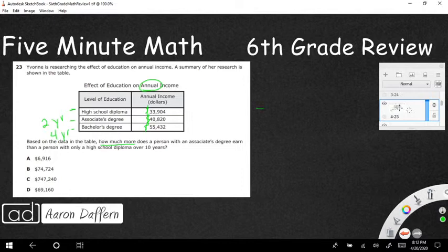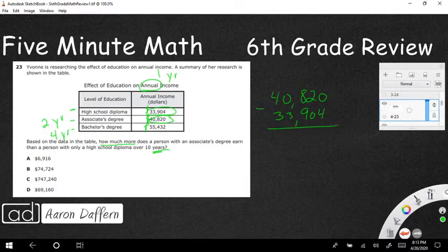How much more? So we're going to compare two with subtraction. Does a person with an associate's degree earn than a person with only a high school diploma over 10 years? We've got two ways to do this. You can multiply each of these by 10 and then subtract. What I'm going to do is I'm just going to subtract the annual, that's just the one year. And that's one trick here, you need to know that annual is one year. So we're going to have to multiply by 10. So I'm just going to do my one year, 40,820. I'm going to subtract that from a high school diploma. Make sure you get the correct numbers, 33,904. And then I'll just take that difference and multiply it by 10. Multiplying by 10 is super easy, you just slap a zero on the end of it. And then at this point, it's going to be just your basic subtraction. So we're going to borrow.